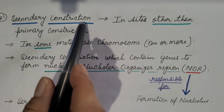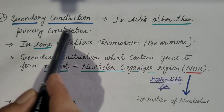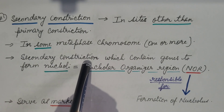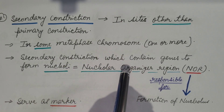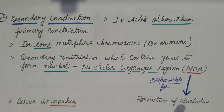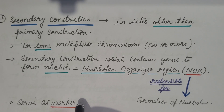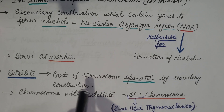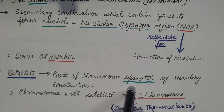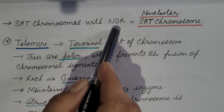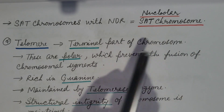Seventh is secondary constriction — in addition to the primary constriction, secondary constrictions are present in some metaphase chromosomes. Secondary constrictions that contain genes for nucleolus formation are known as the nucleolar organizer region (NOR); these are responsible for the formation of the nucleolus and serve as markers because they are located at consistent positions. Eighth is satellite — the part of the chromosome separated by a secondary constriction is known as a satellite. A chromosome with a satellite is known as a SAT chromosome. When the secondary constriction has genes responsible for nucleolus formation, it is a nucleolar SAT chromosome.